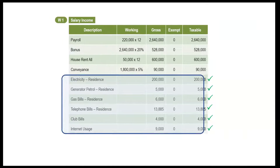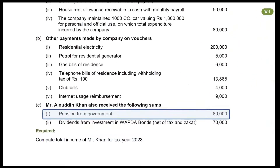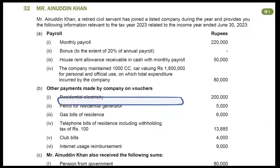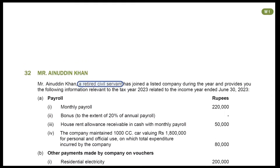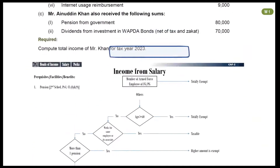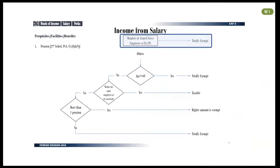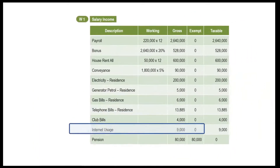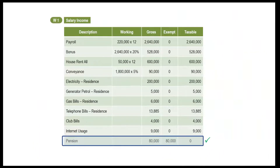The next item is pension from government. It is given at the start of the question that the taxpayer is a retired civil servant, which also means he is a retired government servant. Recall the notes slide: pension of government employees is exempt from tax. Mention it in your working — nothing will be included in taxable income, as the entire amount of Rupees 80,000 is exempt from tax.